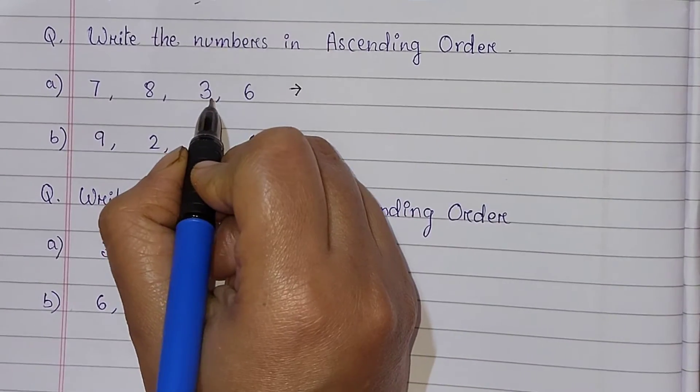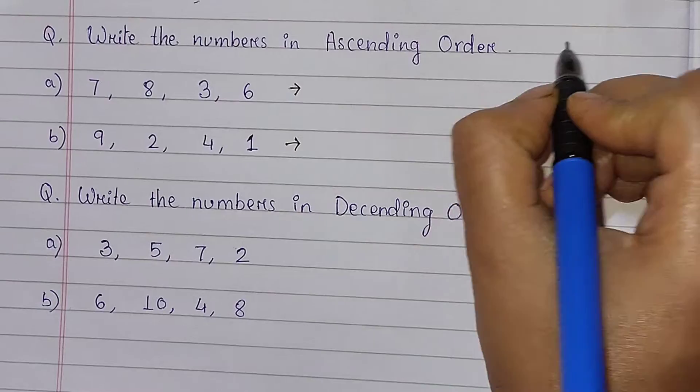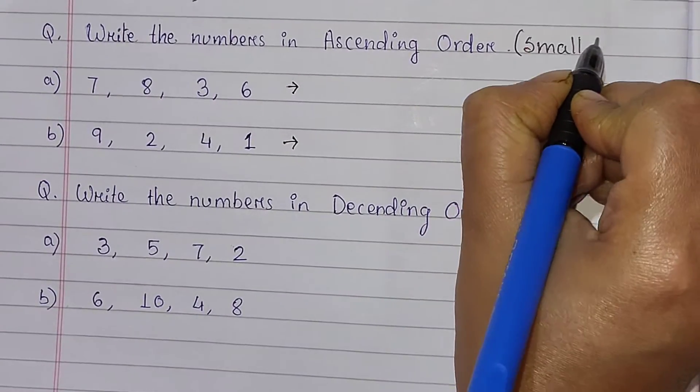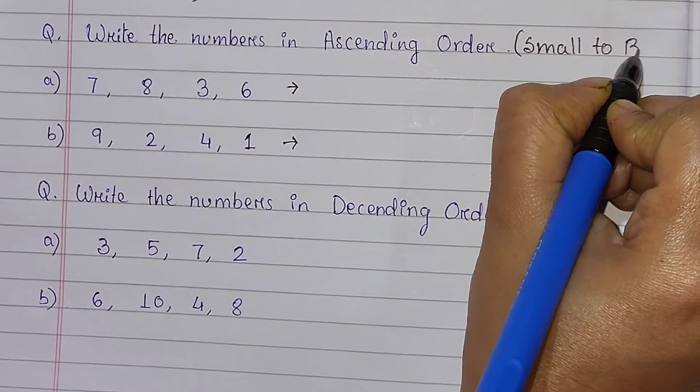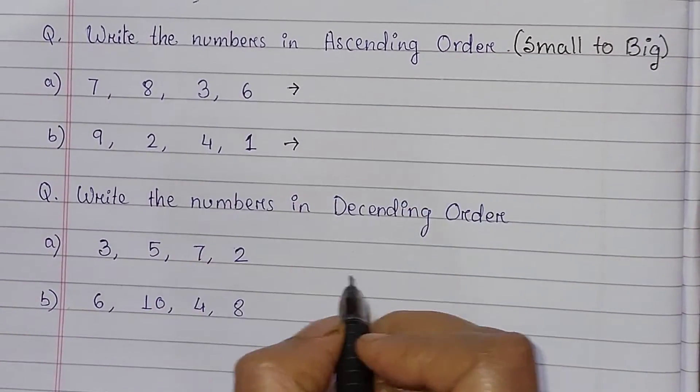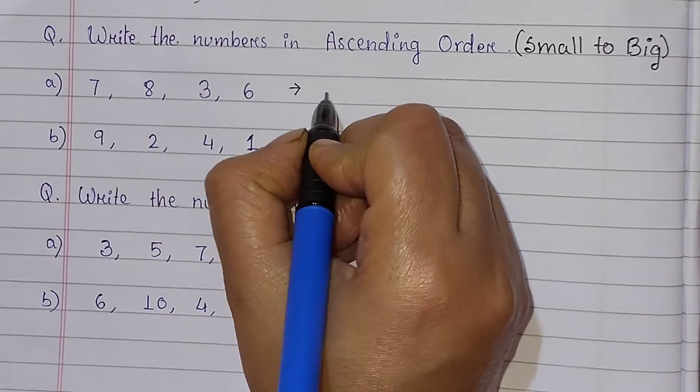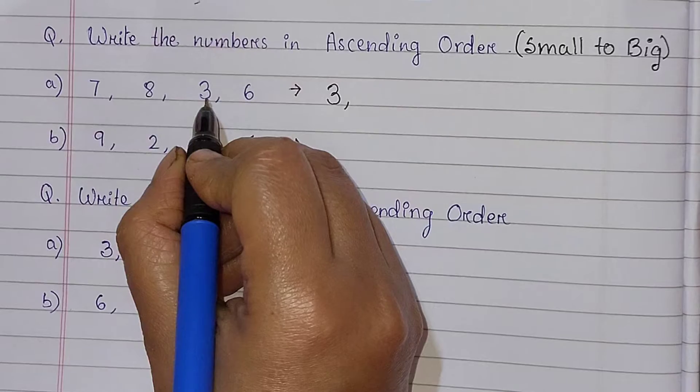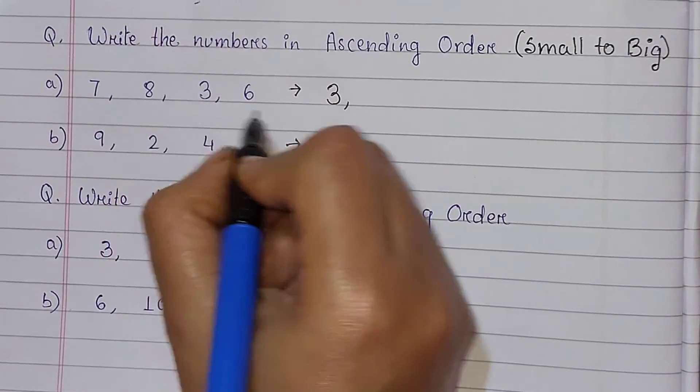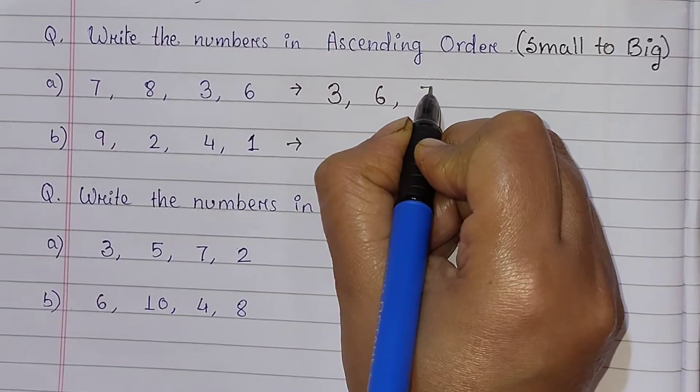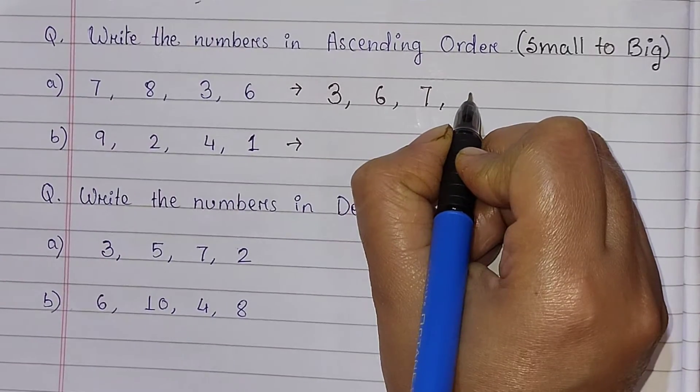Next question is write the numbers in ascending order. Ascending means small number to big number. First of all, check the number. Which number is small? It is 3. Next, again check which number is small? It is 6. Then again check, it is 7. Then the last number is 8.